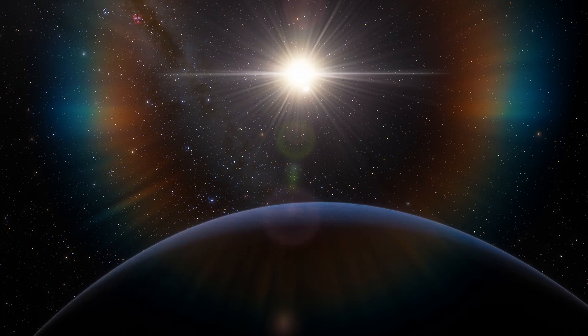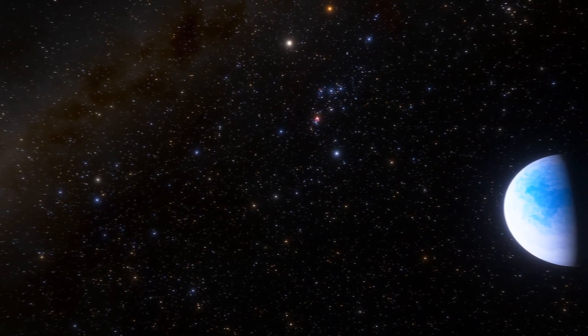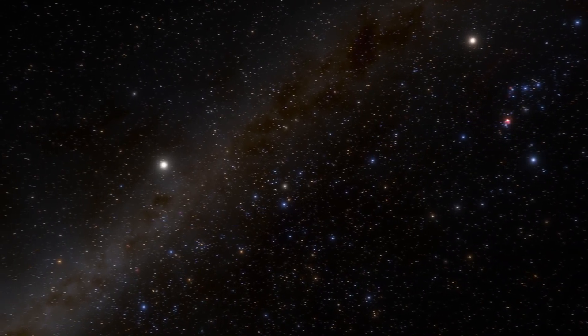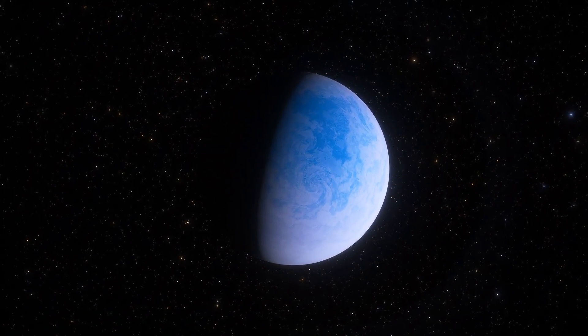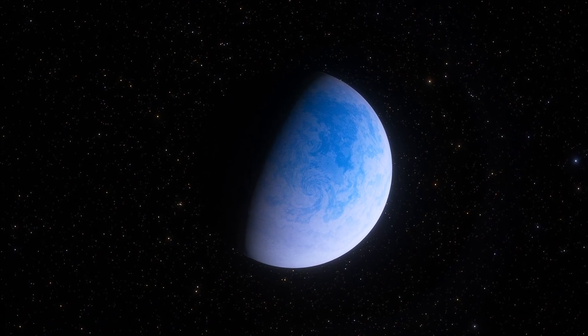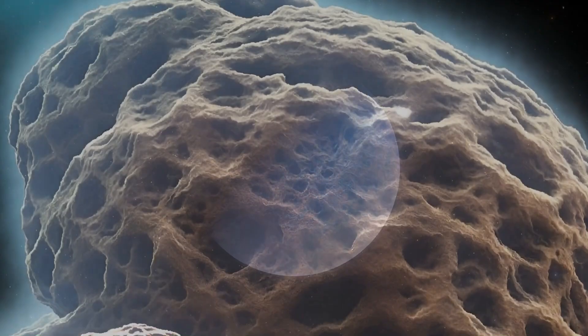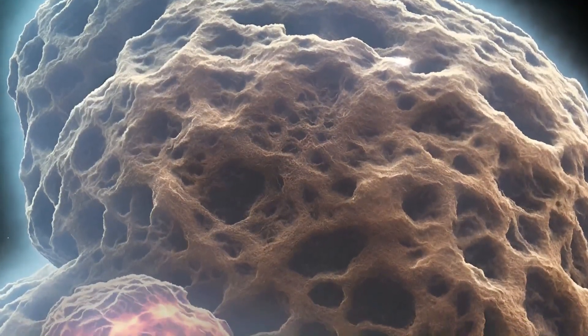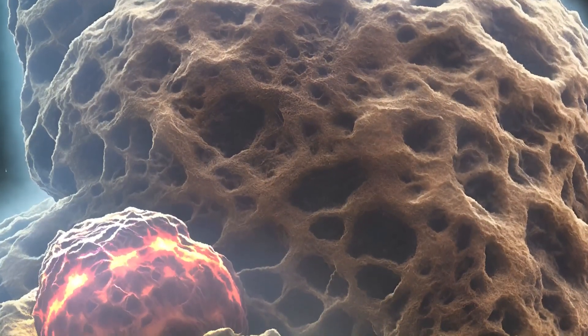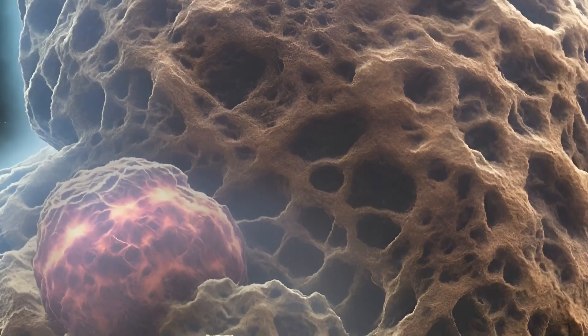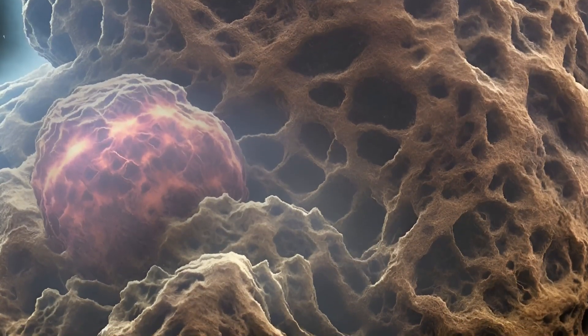The planet Tau Ceti e, with a minimum mass of 4.3 Earth masses, fell on the inner edge of the habitable zone. On its surface, water can theoretically be in a liquid state, which means that there are conditions for the existence of living organisms. The planet receives about 60% more light than the Earth from the Sun, which heats it up a lot and perhaps it has the conditions necessary for the emergence of life of only simple thermophilic organisms, a type of extremophiles thriving at temperatures of 45 to 122 Celsius.